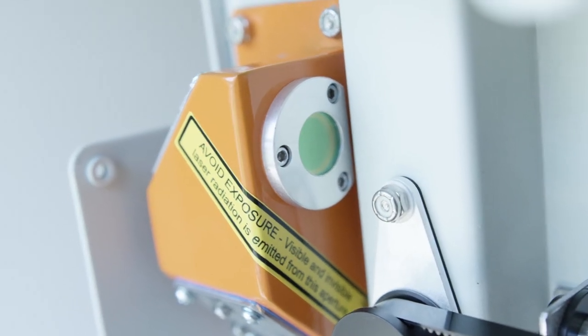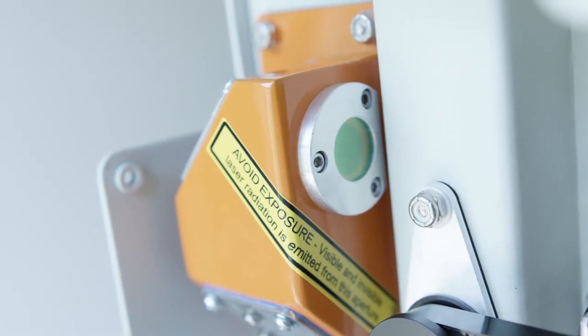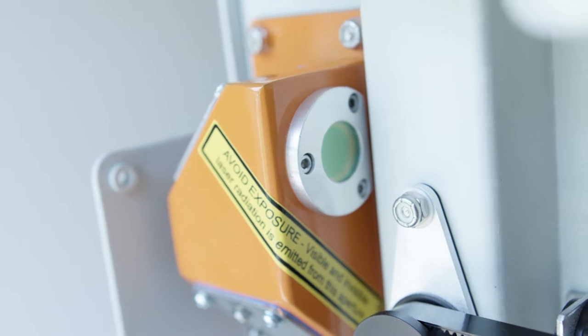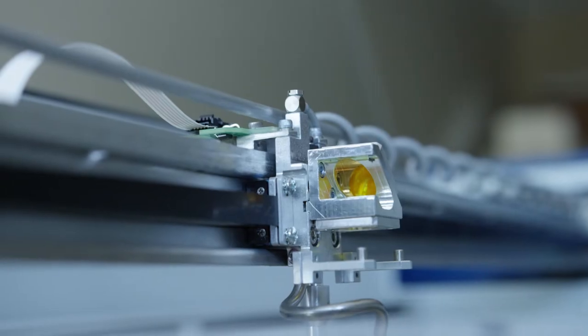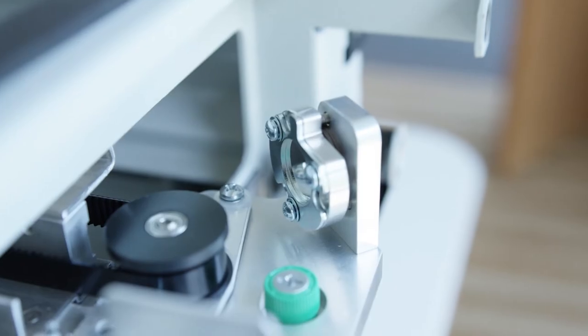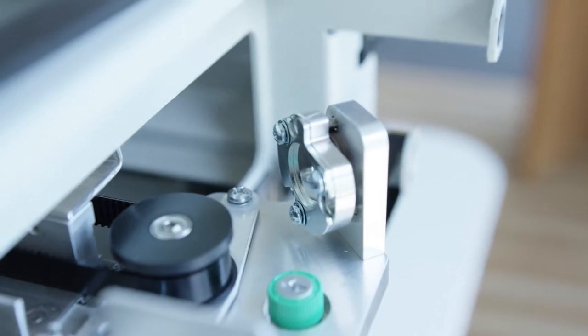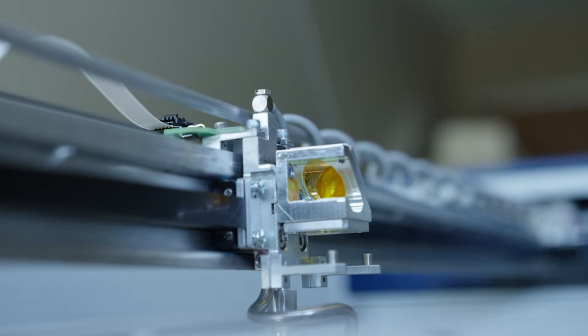The mirrors in the periscope housing are enclosed and will likely require cleaning less often than the other components of the optics system. These other components are exposed to dust, smoke, and other debris and should be cleaned regularly as part of your routine maintenance.